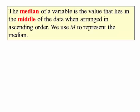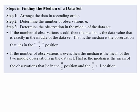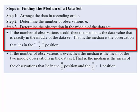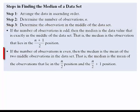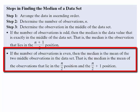Lesson objective number two: determine the median from raw data. The median of a variable is the value that lies in the middle of the data when arranged in ascending order from smallest to largest. We use capital M to represent the median. To find it: first arrange the data in ascending order, then determine the number of observations. If the count is odd, the median is in position (n+1)/2. If even, the median is the mean of the two middle observations, at positions n/2 and n/2 + 1.